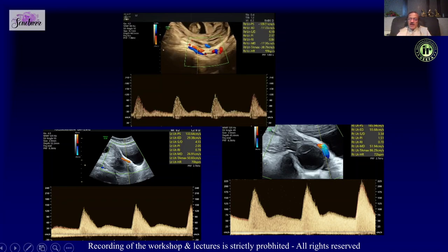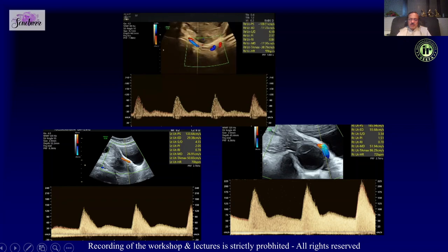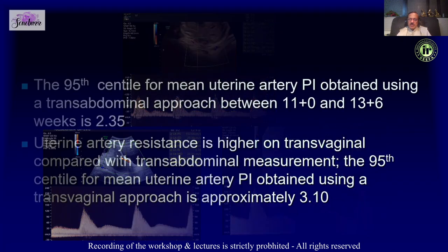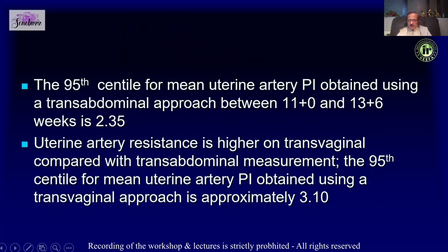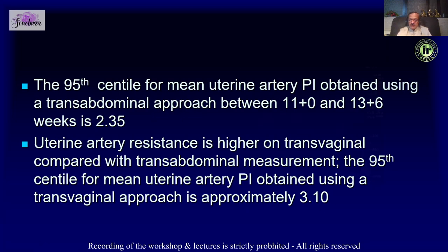We have reference charts, but for all practical purposes a mean PI above 2.3 or 2.4 is considered high in the first trimester.